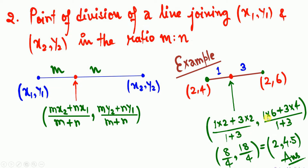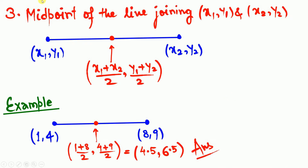Continuing the example: for the y-coordinate, (1×6 + 3×4)/(1+3). Solving this, you get the coordinate point (2, 4.5). I suggest you solve this by yourself and type the answer in the comment box to verify against my answer.